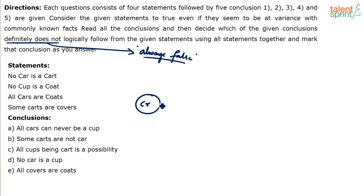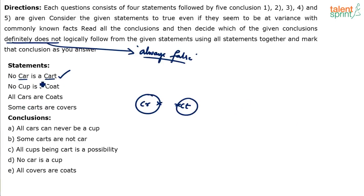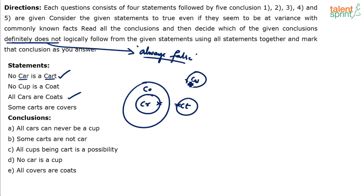No car is a cart. Use the notations properly. No cup is a coat. You have to consider the statements in the right sequence — if you draw a separate diagram, you won't be able to connect with the third statement. Since we have already drawn cart and car, use the next one: all cars are coats. Then, no cup is a coat, so cup and coat will not touch each other.